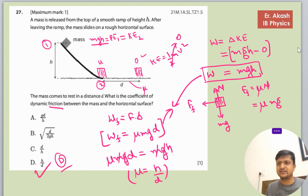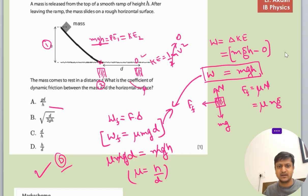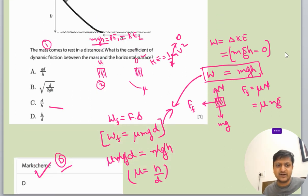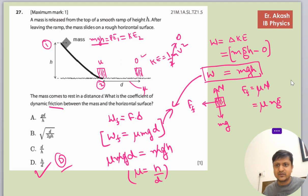Now we will check the mark scheme. The mark scheme says d is the right answer. So I hope you understood what we have to do in this question. First we calculate the work done by the energy theorem, then the work done by the frictional force, and then we equate both of these equations.